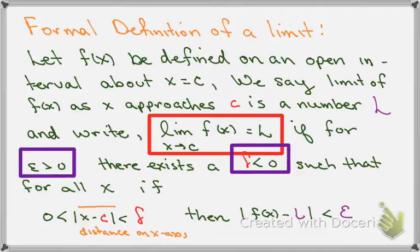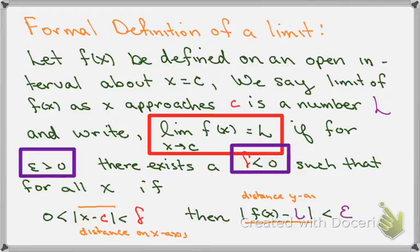Then, the absolute value of f of x minus L must be less than epsilon. Epsilon is just a positive number, and the absolute value of f of x minus L represents the distance between the functional values and the limit on the y-axis. So if I've chosen x in that interval close to c on the x-axis, the distance of the functional values from my limit on the y-axis has to be smaller than epsilon — there's a connection between the two. In my next video, I'm going to show you how to apply this to an example.